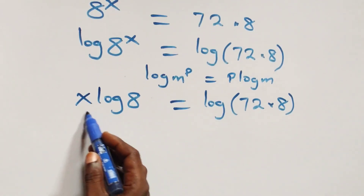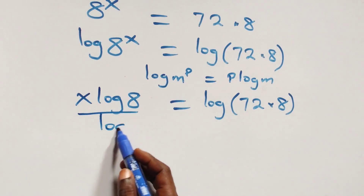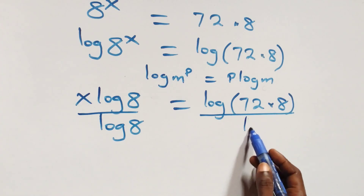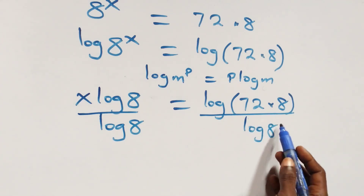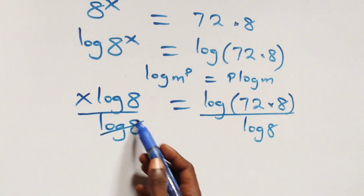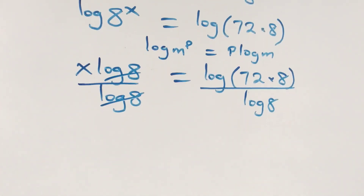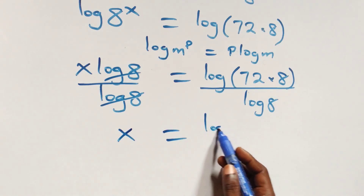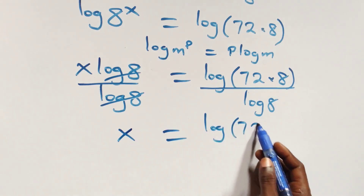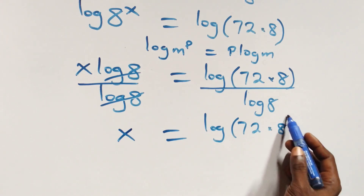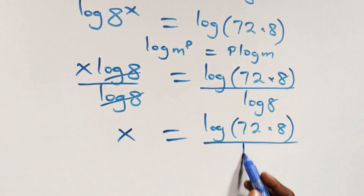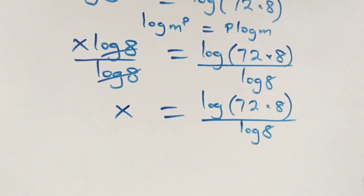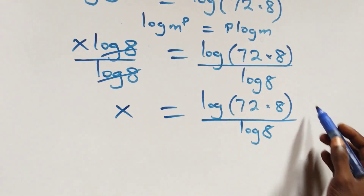Next step, we divide both sides by log 8. Log 8 cancels on the left side, and we have x left, which is equal to log of 72 times 8, over log 8.